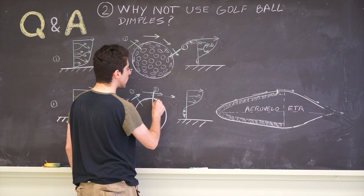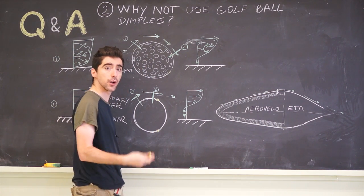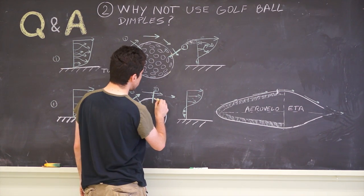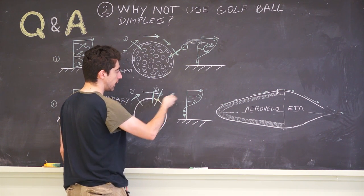That is where the separation point happens, and we saw in the previous question why separation is bad, so for a smooth object, that would happen roughly here.